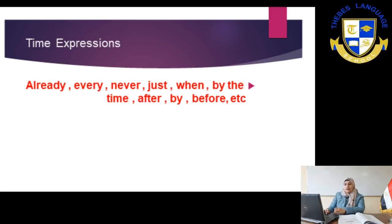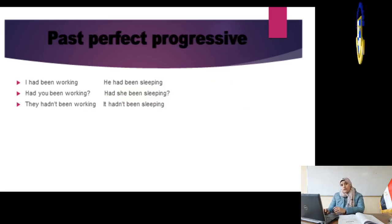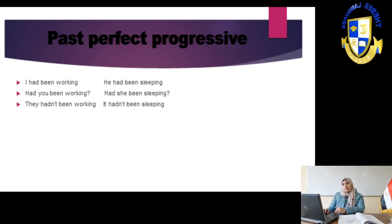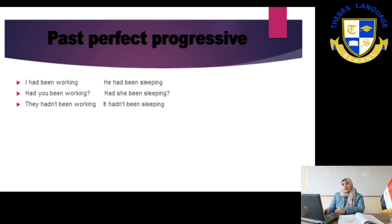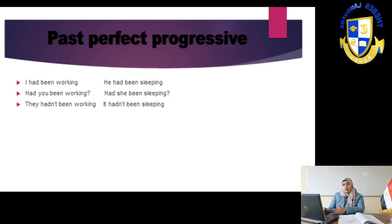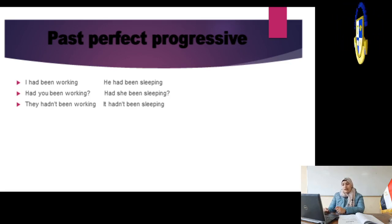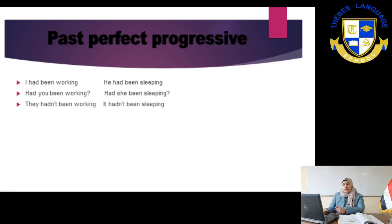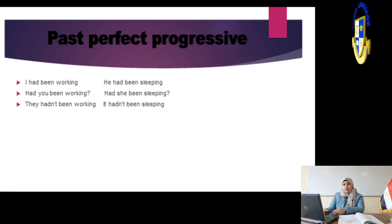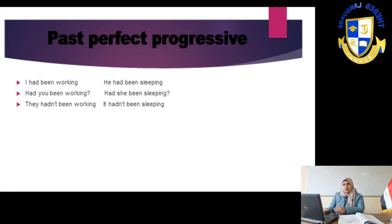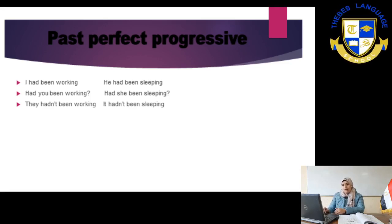Now we will move to the past perfect progressive. The form is: had + been + verb + ing. For example: I had been working — this is affirmative. He had been sleeping. As mentioned before, we use 'had' with all the pronouns: I, he, we, they.